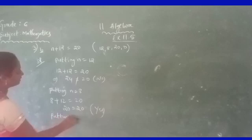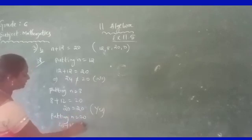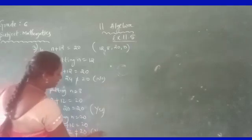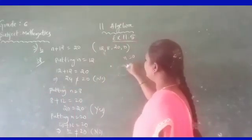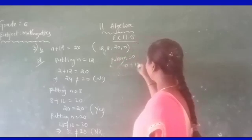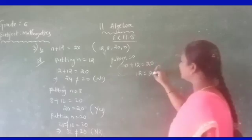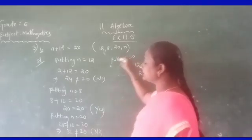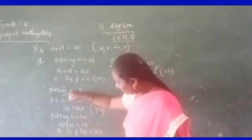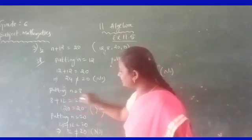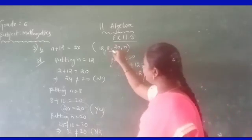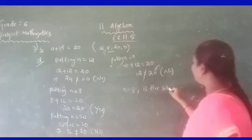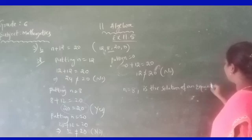Check M equal to 20: 20 plus 12 is 32. Is 32 equal to 20? Not equal, so not the solution. Check M equal to 0: 0 plus 12 is 12. Is 12 equal to 20? Not equal — also not a solution. Therefore, M equals 8 is the solution of the equation.